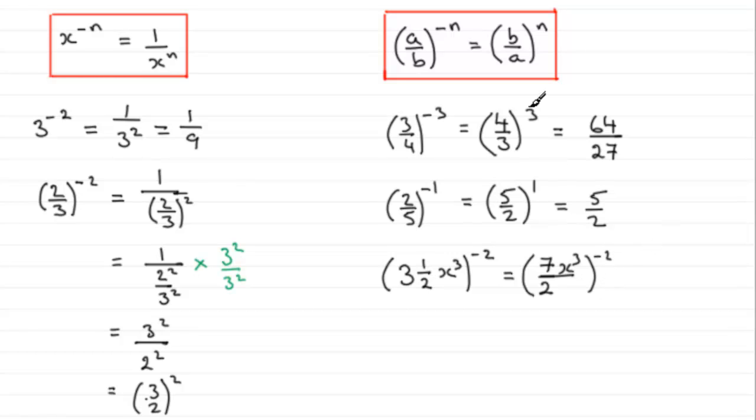So we just stick with the rule that we've got up here, and that is turn the fraction upside down. So we've now got 2 all over 7x cubed, and this is raised to the power 2. So we've just got to square top and bottom.